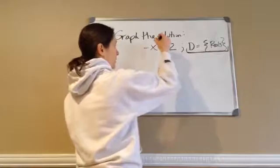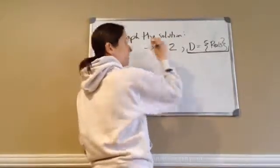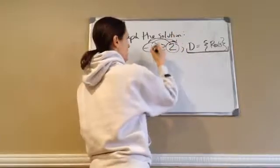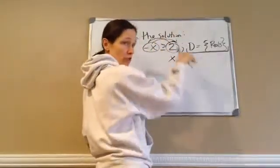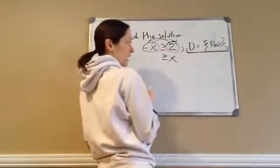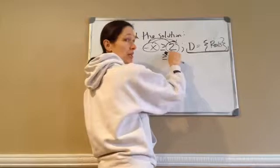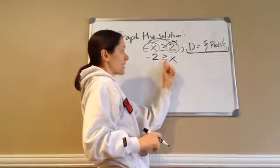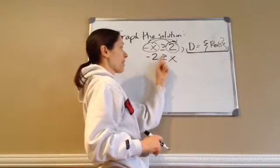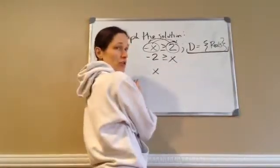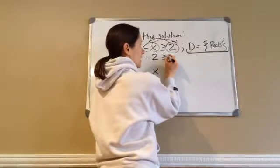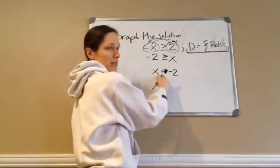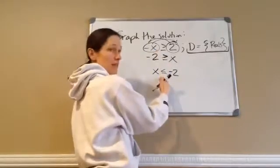My encouragement to you is to pretend like this is an equal sign. If it were an equal sign, I would move the negative x to the other side and the positive 2 to the other side. So the negative x becomes a positive x, and the 2 becomes a negative 2. This gives us x is less than or equal to negative 2.